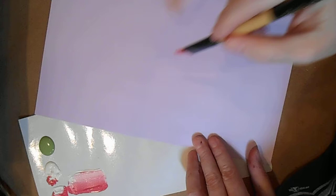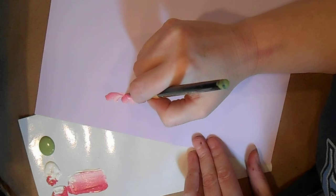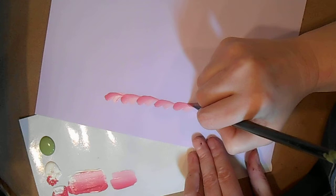Okay, so the first stroke I wanted to show you is just a simple border stroke where we're just taking and overlapping. Chisel, pull down, and lift. Chisel, press, lift.